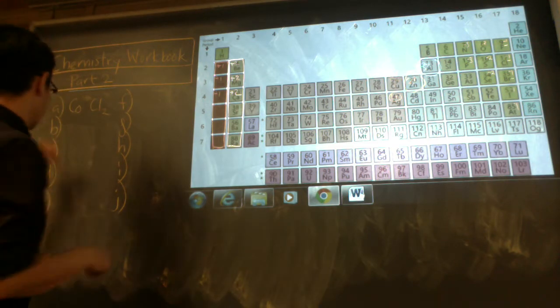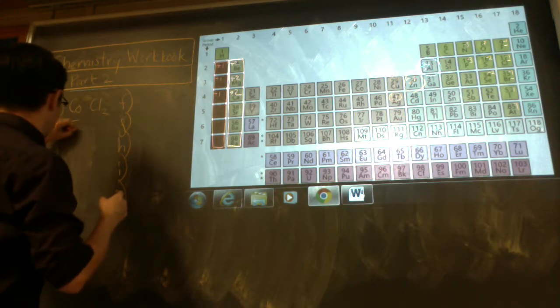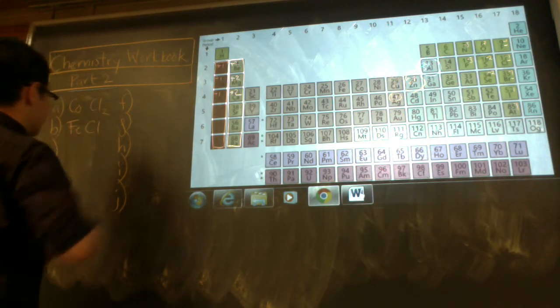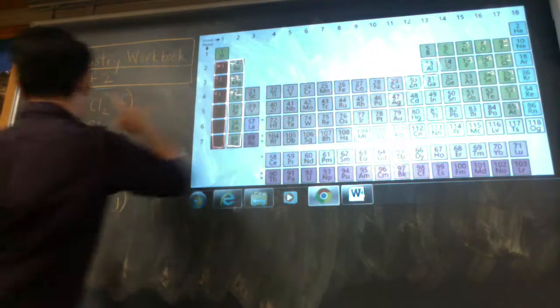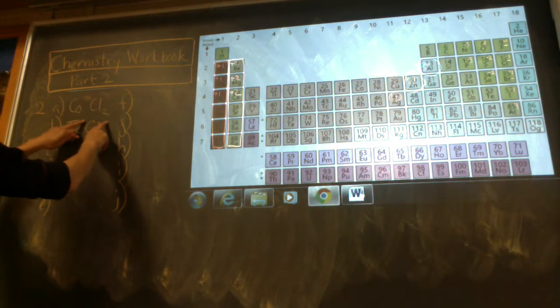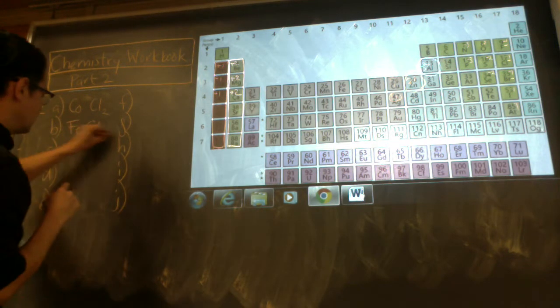Iron(II) chloride. Iron is Fe. Chlorine is 1-. The name tells us that iron is 2+. So 2 goes down, 1 over here. FeCl2.